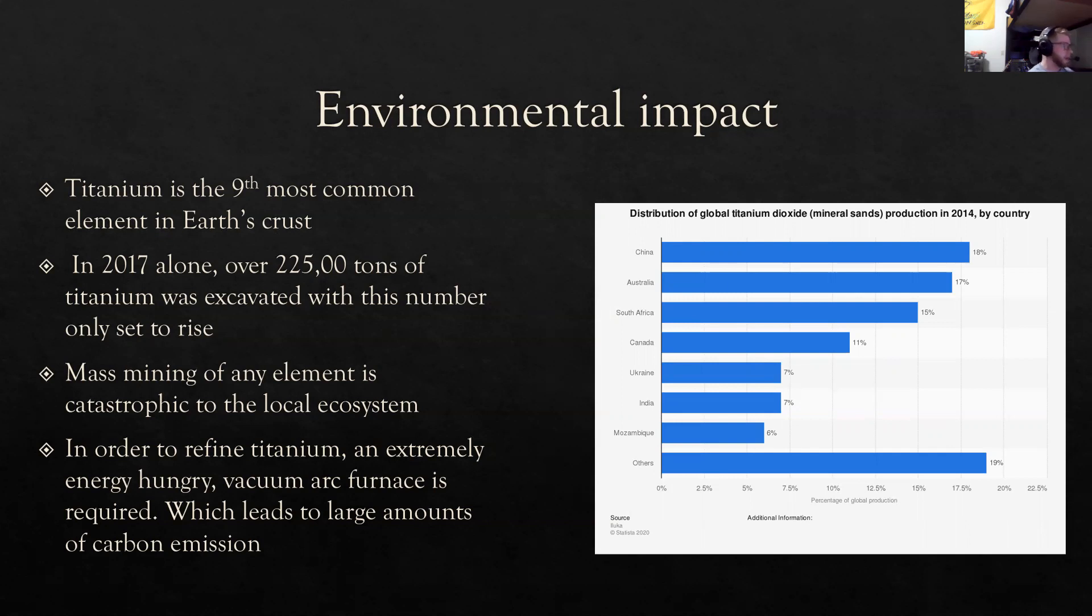The mass mining of any element is catastrophic to the local ecosystem, and titanium in this regard is no different. Large-scale mining of titanium in rural countries will completely destroy ecosystems and the wildlife. In order to refine titanium, an extremely energy-hungry vacuum arc furnace is required, and this leads to large amounts of carbon emission as the power stations needed to provide energy for this process produce a lot of carbon.